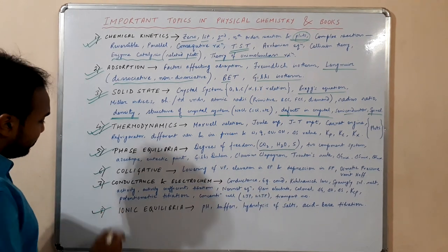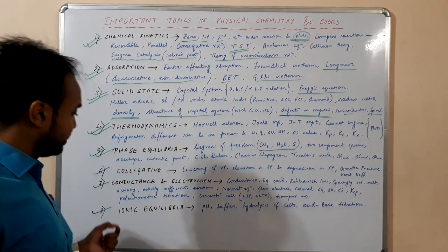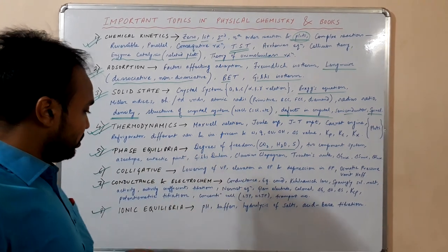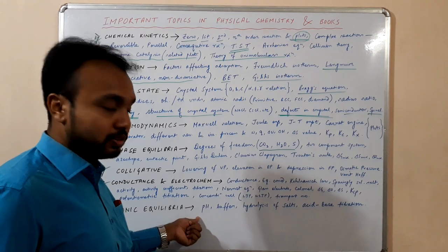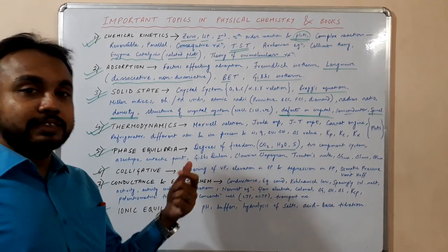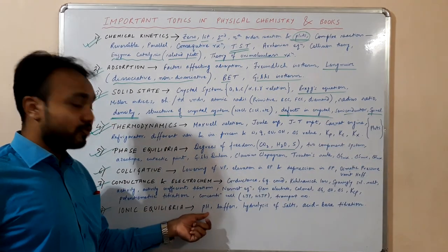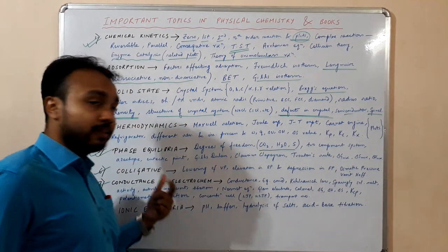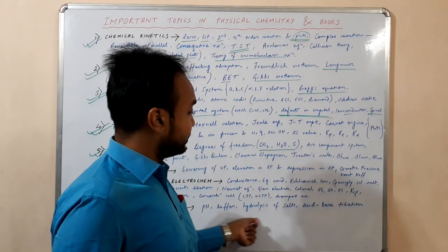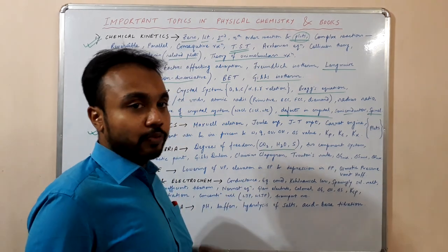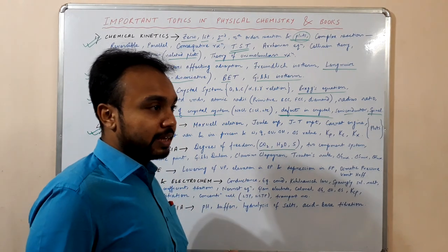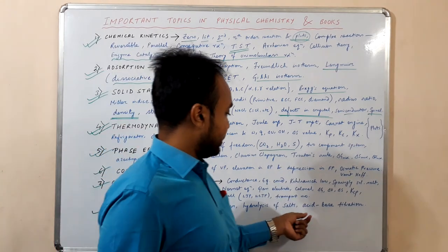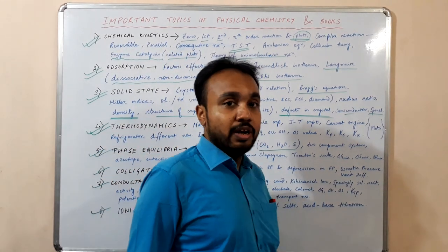Next is ionic equilibria. This is also an important chapter — one or two questions may come from it. You have to calculate the pH, for example given 10^-8 molar HCl. Then the buffer and Henderson equation. Then hydrolysis of salts: salts of weak acid and strong base, salts of weak base and strong acid. And then acid-base titration.